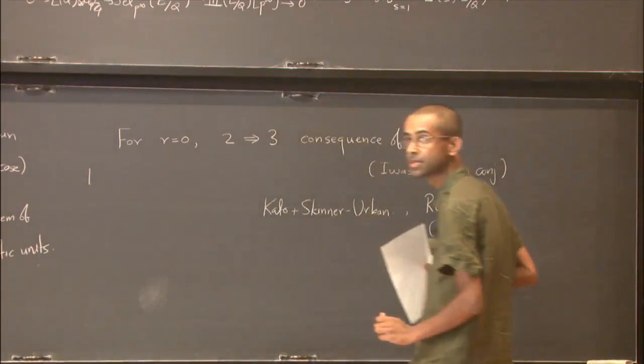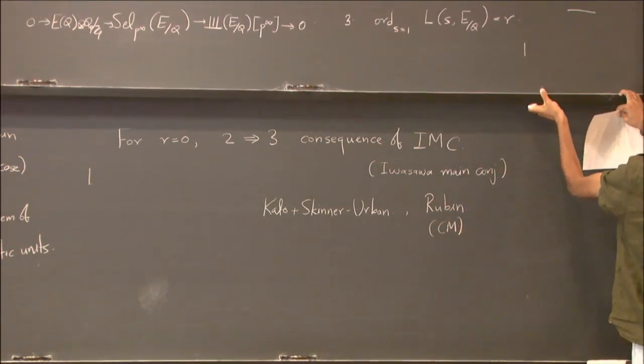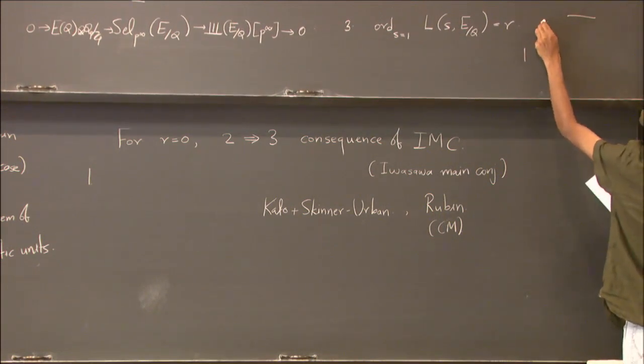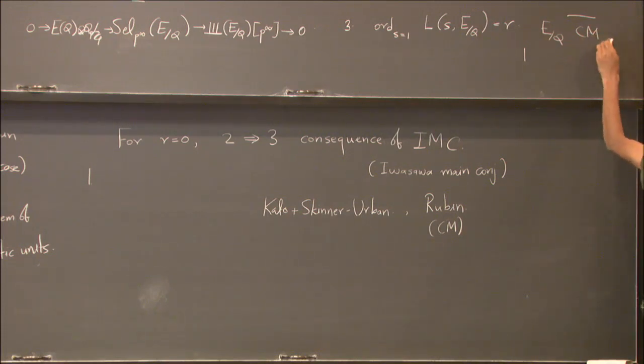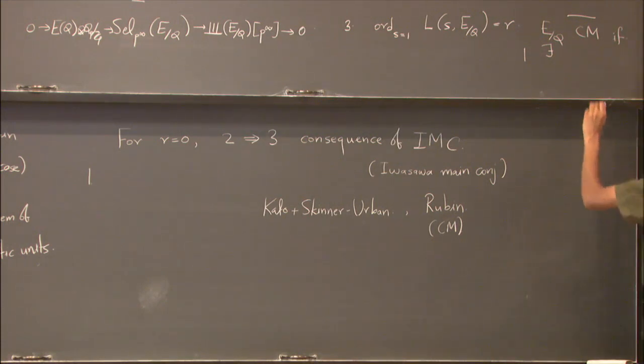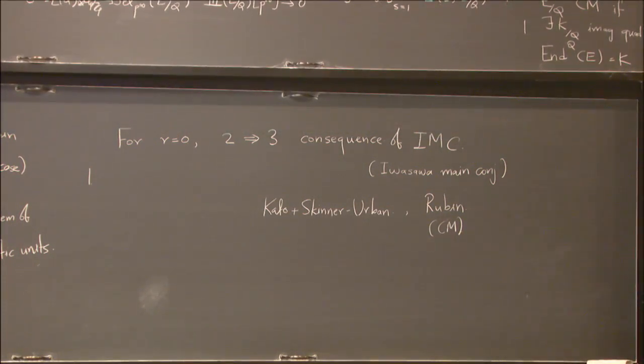What is CM again? Yes, let me, yes, sorry. So we say that this E over Q is CM if it has extra endomorphism. So if there exists K over Q imaginary quadratic, the endomorphism algebra is extra endomorphism algebra.